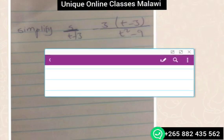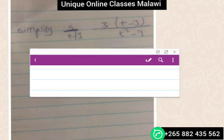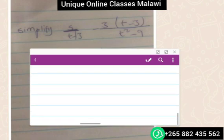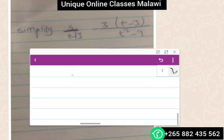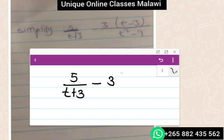So I'm writing it. It's 5 divided by t plus 3, then minus 3 over the bracket t minus 3, close the bracket divided by t square minus 9.